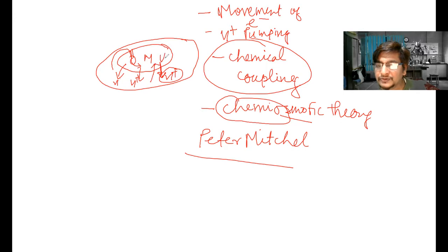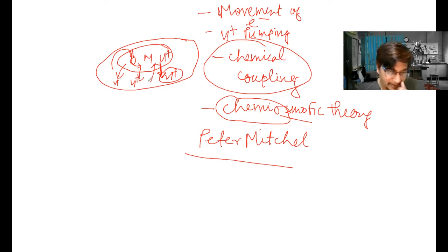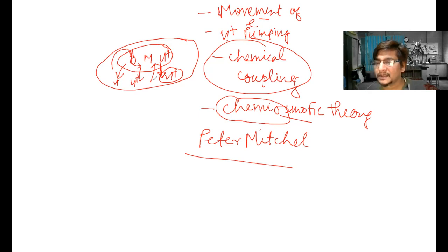Anything that provides an alternative way for H+ ions to enter the matrix will reduce ATP formation - as happens with thermogenin in polar bears, or the uncoupler DNP (dinitrophenol). Hopefully you are able to understand these concepts. We'll see you in the next lecture. Thank you for listening patiently - please comment if anything else is required.